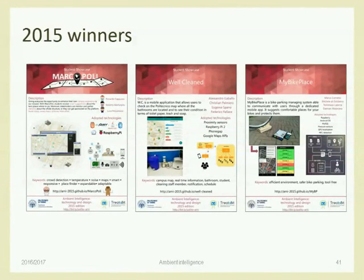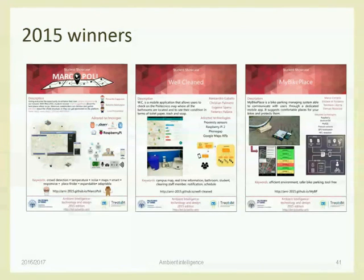The rule is that every project that passes the exam can come and present at the showcase. I don't care if the score is 18 or 30 — every project that passed is a good project and eligible to be shown. At the showcase, projects are voted by the public, and the three projects with the highest public scores — completely unrelated to the exam score — win a prize sponsored by companies. Last year one prize was an Apple TV for each member of the group; another prize was Sonos speakers.